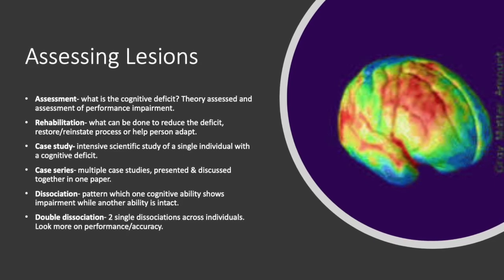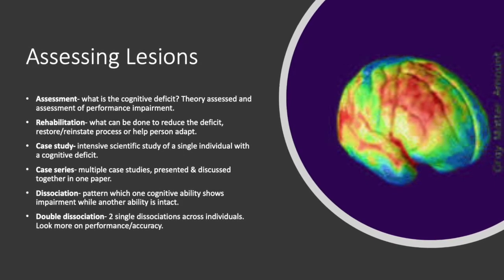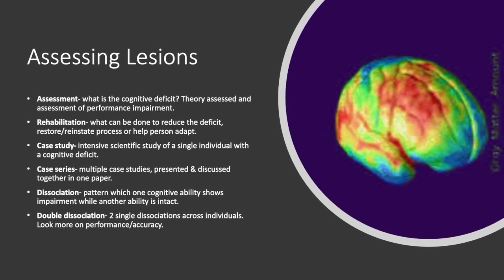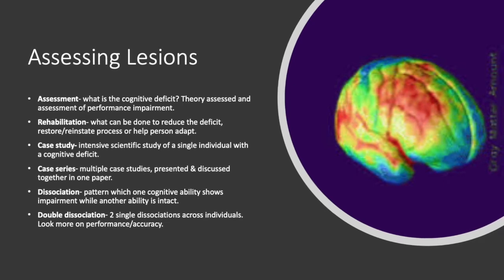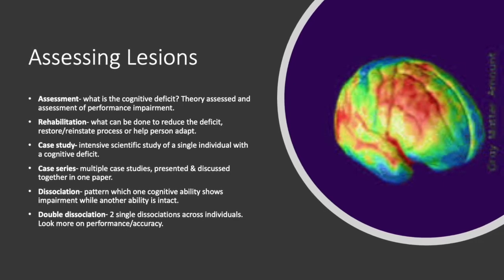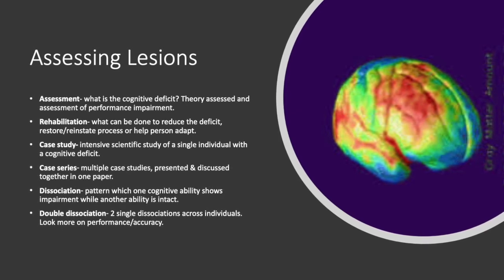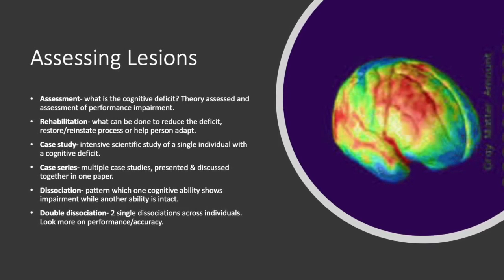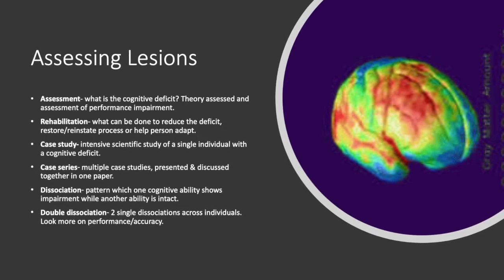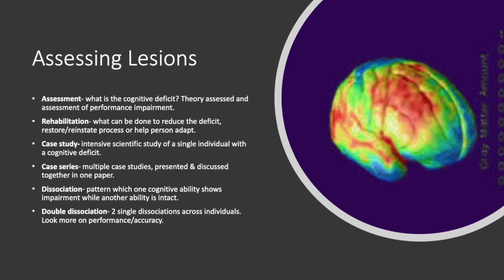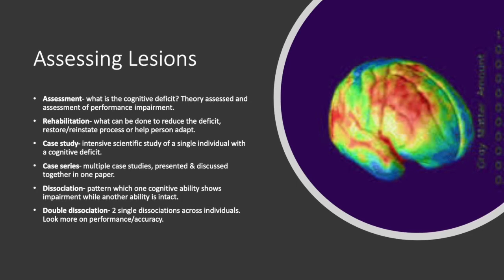A case study is the intensive scientific study of a single individual with a cognitive deficit. A case series is defined as multiple case studies presented and discussed together in a single paper. Dissociations are patterns where one cognitive ability shows impairment while another remains intact. Double dissociations involve two single dissociations across individuals, where one individual has an impairment in one ability with another intact, and for another individual it is vice versa.